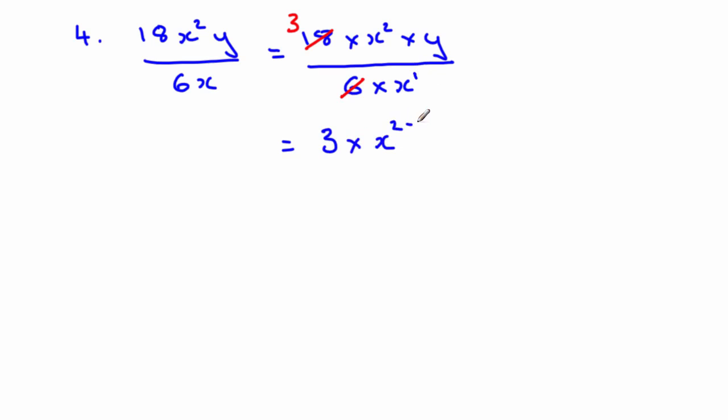Our fourth example is a division as well. 18 x squared y all over 6x. Expanded form 18 times x squared times y all over 6 times x. Once again we can cancel. 6 goes into 18 3 times. And then we're going to apply our rules. And we can do that fairly quickly. We've got 3 here. Our x's. Now there's a 2 there. And remember there's a 1 there. So we're going to subtract those because it's a division. And we don't have to do anything with the y. Because there are no other y's. Working this out we get 3. 2 minus 1 is 1. So we're going to leave it just like that. And then y. And there's our solution.